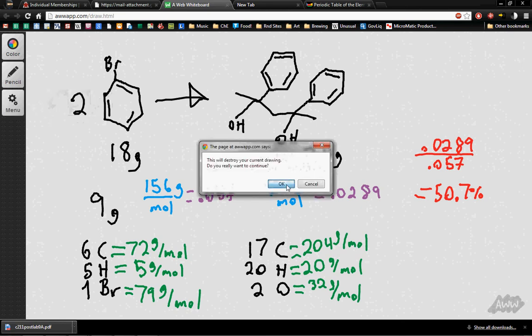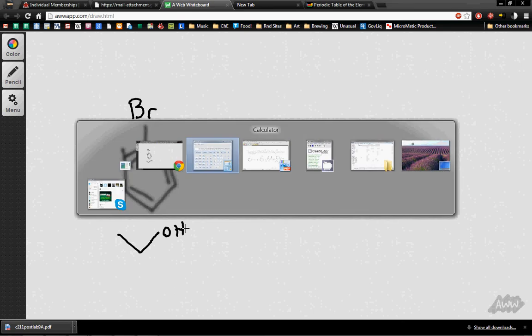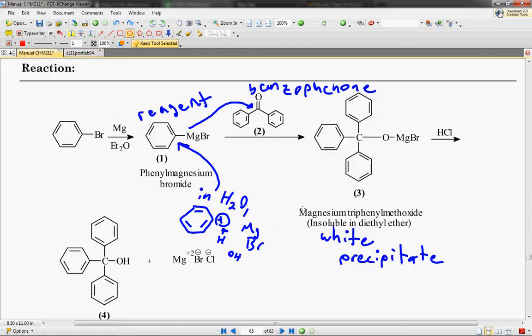And then the very last problem is we're wondering what would happen if we reacted it with ethanol. So we've got that same bromobenzene, and this time it's reacting with ethanol, which is CH3, CH2, OH. So what's actually going to happen here is, once again, if we go back to our lab manual,